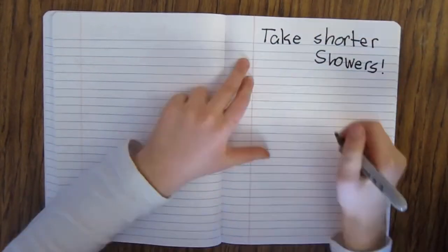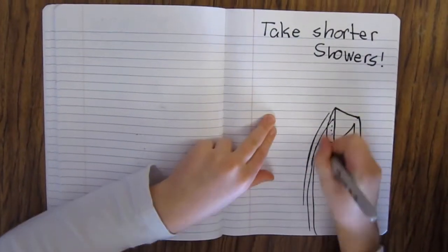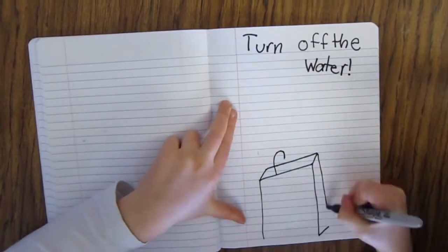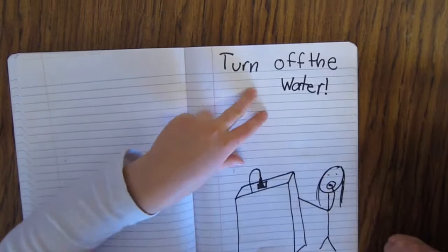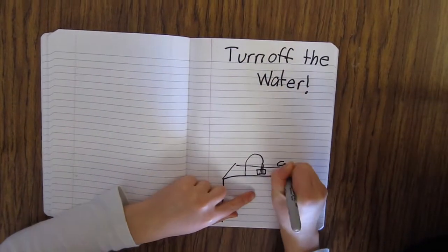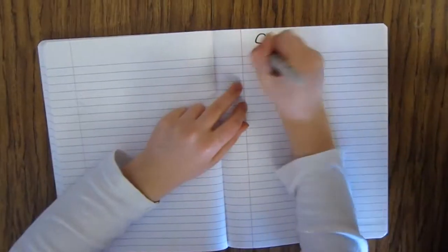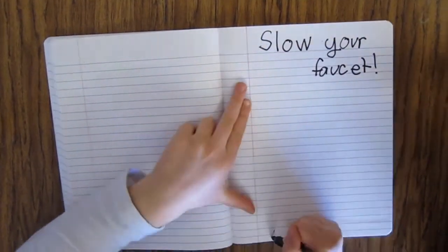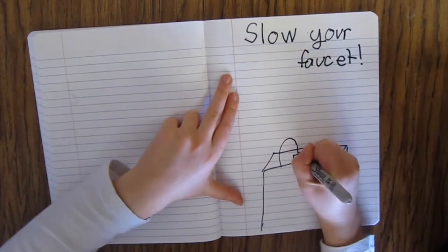There are lots of things we can do to conserve water, like take shorter showers, turn off the water while you brush your teeth, turn off the water while you wash your dishes, and slow your faucet to a drip when you heat your water.